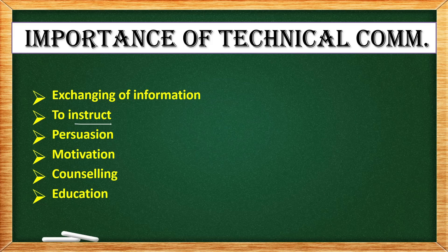The second importance is to instruct. Higher levels of authority give instructions to middle and lower levels of authority. That is important because without instructions, it is difficult for us to set a boundary. So through technical communication, we are able to receive and get information in the form of instructions through different levels of hierarchies.